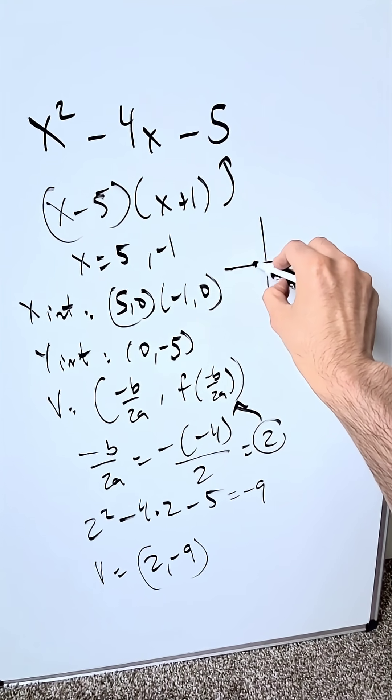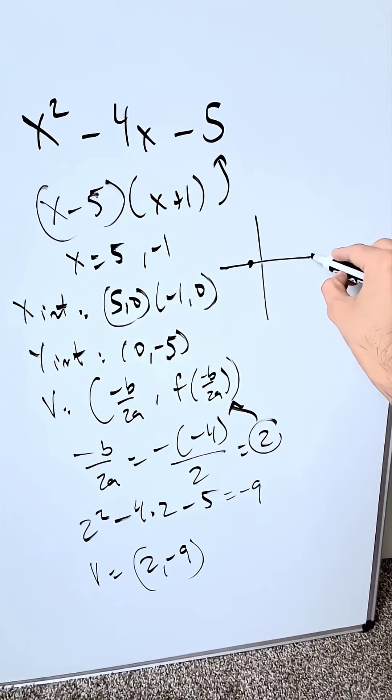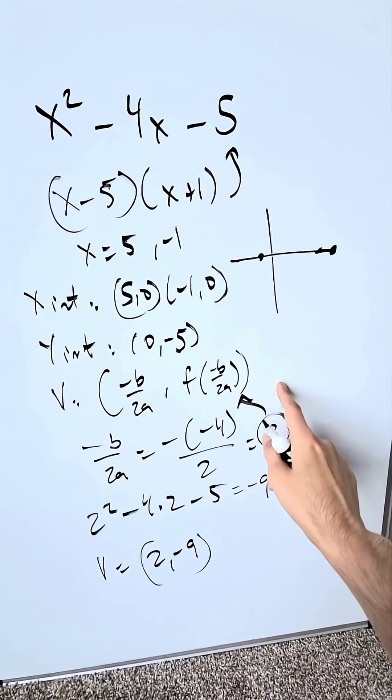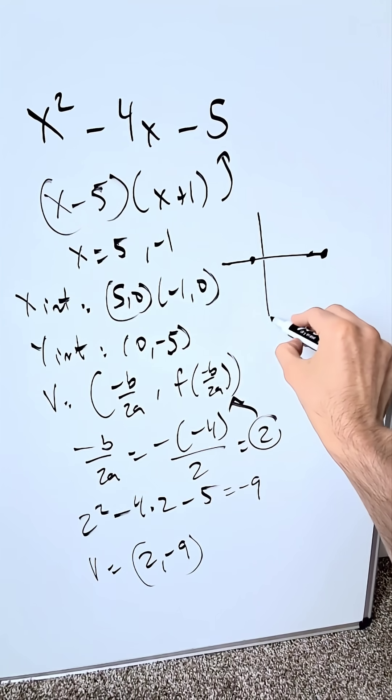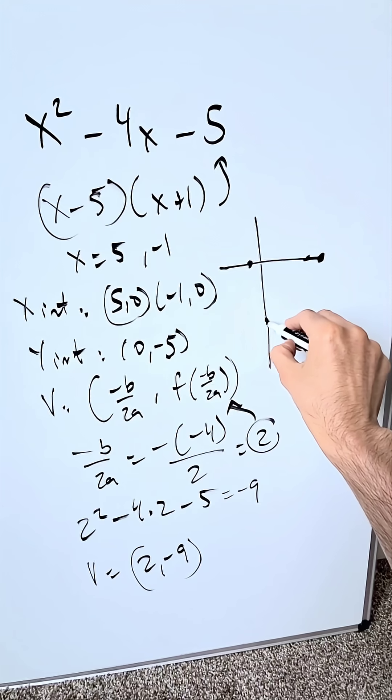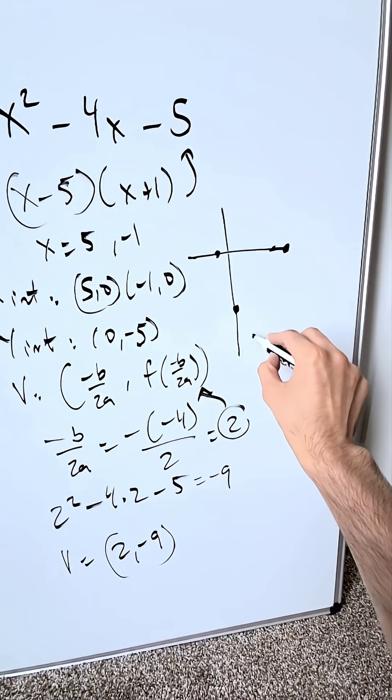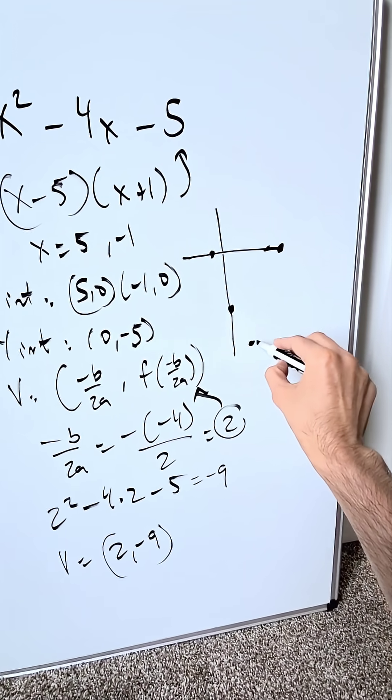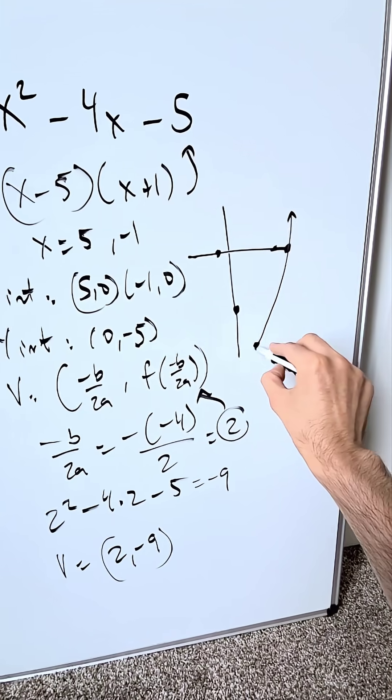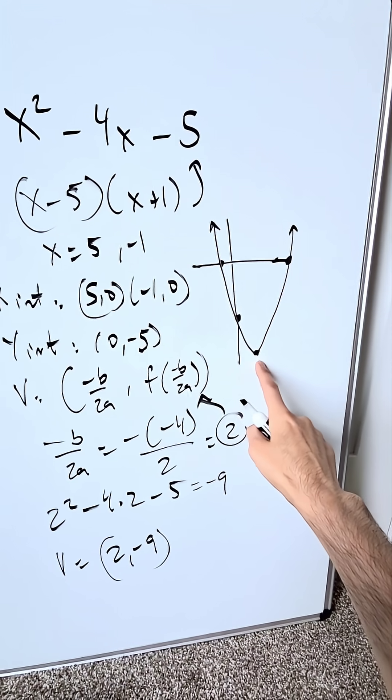Minus 1 comma 0, an x-intercept. 5 comma 0, another x-intercept. We have here 0 comma minus 5. We will extend this further down. Here's my 0 comma minus 5. I have my vertex 2 comma minus 9. I'll bring that down over here. Now all I have to do is just connect the dots and that right there would be my quadratic equation which here is a parabola.